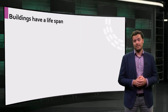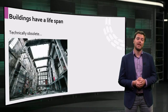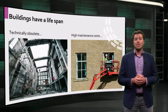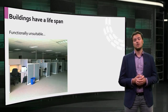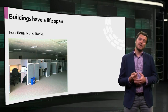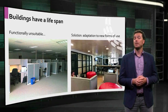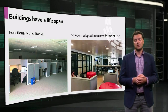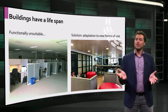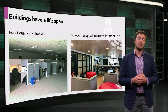All buildings have a lifespan. At a certain point in its lifetime, a building in its current state is not fit for use anymore. Buildings can become technically obsolete, maintenance costs can skyrocket, and buildings can become functionally unsuitable for current uses. In many cases there are possibilities to adapt and make existing buildings fit for new use. For instance, a solution could be to adapt the interior to new forms of use. So we don't always need to demolish buildings right away — building lifespans can be extended. Then we need to think about cyclical processes of adaptation.